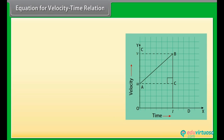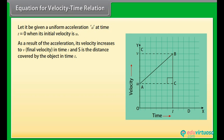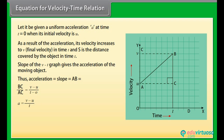Equation for velocity-time relation. Consider an object moving with uniform velocity U in a straight line. Let it be given a uniform acceleration A at time T = 0, when its initial velocity is U. Its velocity increases to V in time T, and S is the distance covered. The slope of the velocity-time graph gives acceleration: A = (V - U) / T, which gives V - U = AT, therefore V = U + AT. This is the first equation of motion.